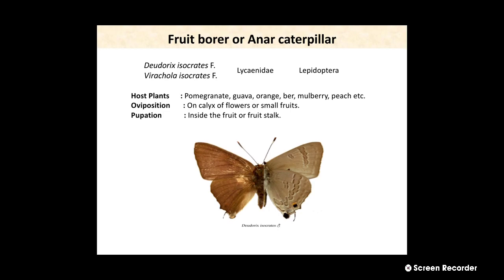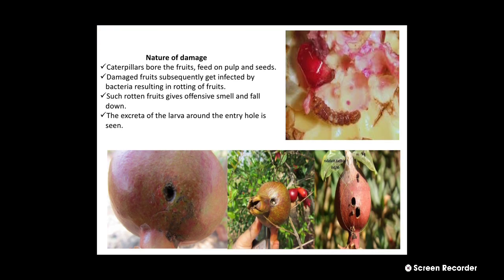In the image we can see the adult moth of Deudorix isocrates. The next point is nature of damage. As we know the damaging stage is caterpillar or larva. The caterpillars bore the fruits and feed on the pulp and also on the seeds. Damaged fruits subsequently get infected by bacteria resulting in rotting, and such rotten fruits give an offensive smell and fall down. The excreta of the larva or caterpillar around the entry hole is also seen.